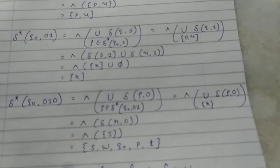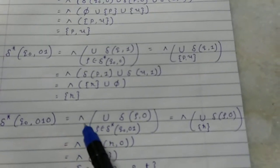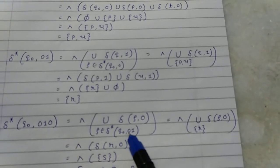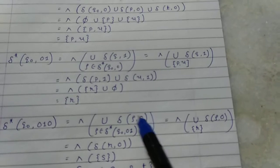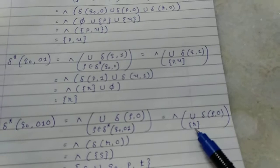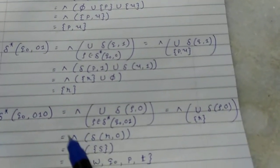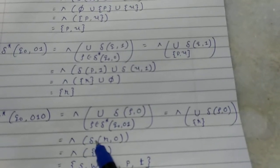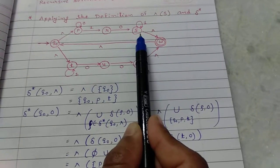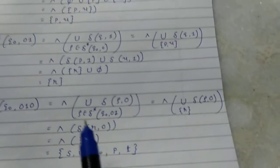Then compute delta star of Q0 on input string 010. Using the recursive definition: delta star of Q0 on 01 is already {R}, so for each state rho in {R} compute delta(R, 0). From R on input 0 there is a state S. So find epsilon closure of S.